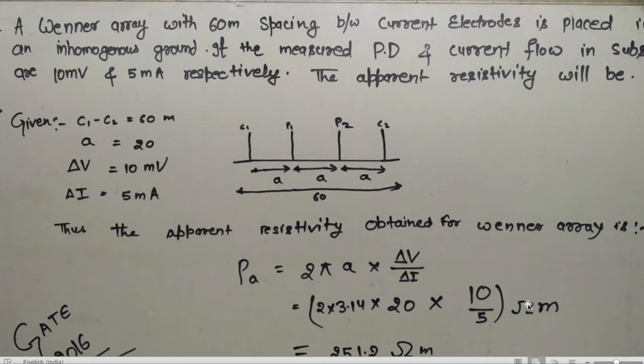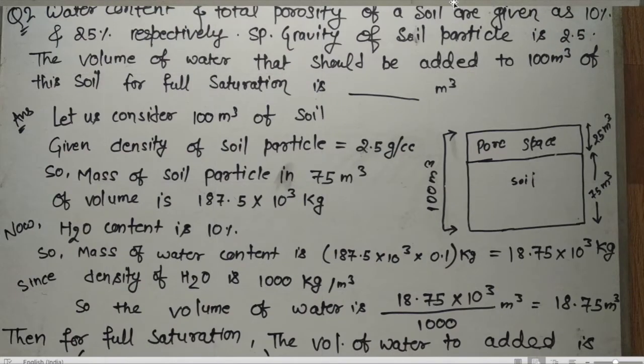Moving to the next question. Water content and total porosity of the soil are given as 10% and 25% respectively. Specific gravity of the soil particle is 2.5 gram per centimeter cube. We need to find the volume of water that should be added to 100 meter cube of soil for full saturation.